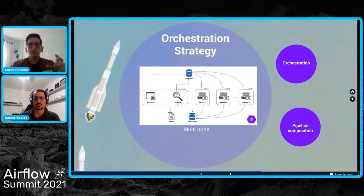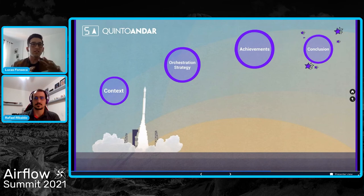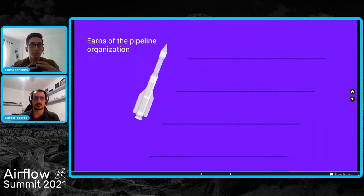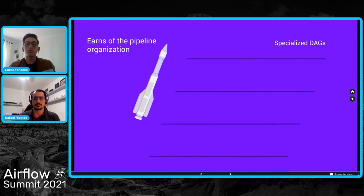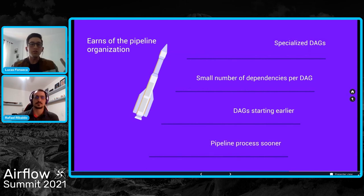This is how we do things here at QuintoAndar — at least for now, because our Airflow is growing fast, as we do. Let's wrap up some of what we achieved with this approach. Thinking about the way we organize our pipeline, this approach allows us to have specialized DAGs with small context. These DAGs have a small number of dependents, and they are able to start earlier and finish sooner than before, enabling the entire downstream to also execute sooner.